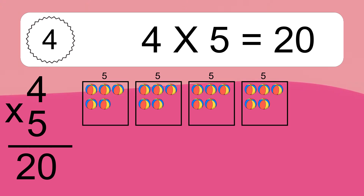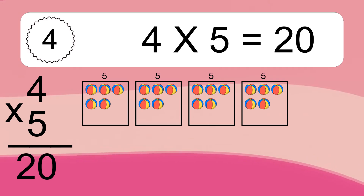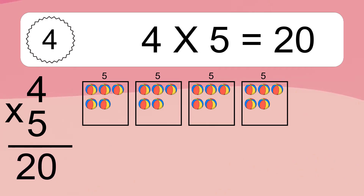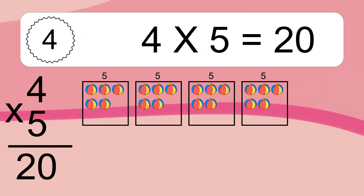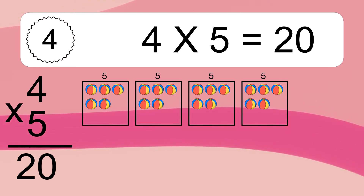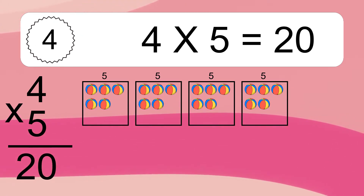4 times 5 equals what? 4 times 5 equals 20. We have 4 boxes and each box has 5 colorful balls inside. If you count all the balls in all the boxes together, you will have 4 times 5 balls. This equals 20 balls.